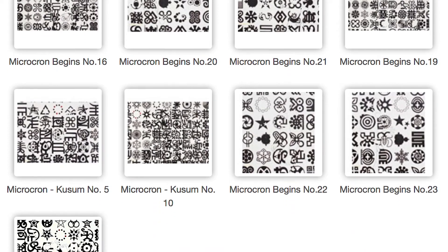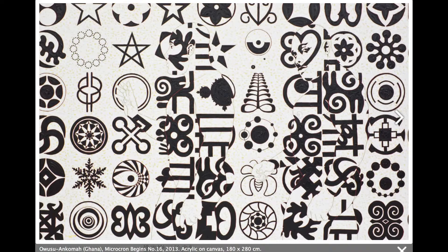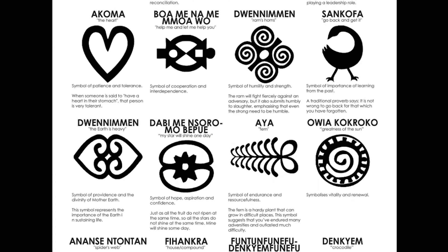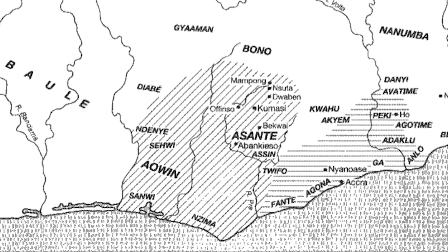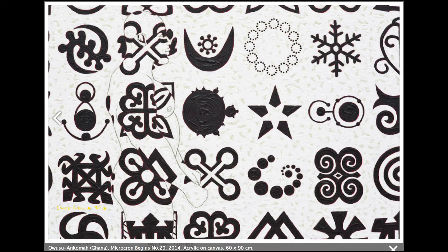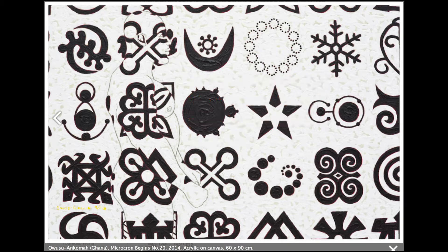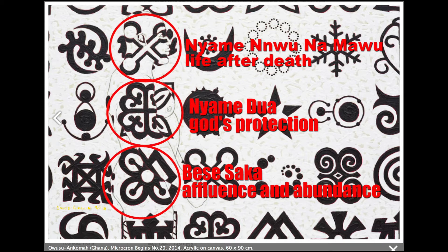Owusu Nkoma's 2013 series Microcon Begins uses visual metaphor to embed human figures in a metaphorical symbolic world. He uses Adinkra symbols, which are pictographs where each symbol depicts a unique concept or idea from the Ashanti kingdom, located in what is now modern-day Ghana. In Microcon Begins number 20, the first symbol our eyes are drawn to is a crescent near the center of the canvas. This is Osramni Nisaroma, an Adinkra symbol meaning the moon and the star, signifying peace, love, and harmony — specifically in the realm of marriage. The figure is therefore perhaps seeking love, marriage, or some sort of harmony. The symbols that comprise his body, taken together, place the figure in a spiritual world of abundance, perhaps a place of life after death, seeking out love.